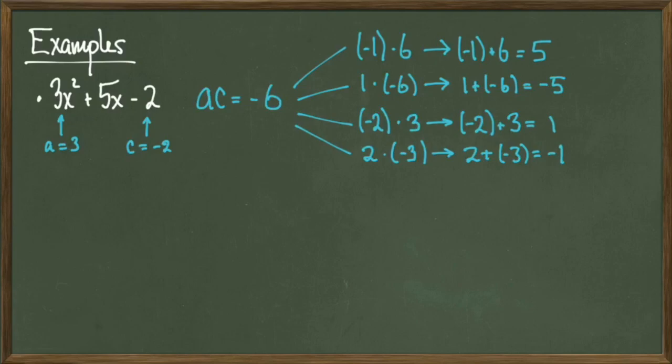We have a few different possibilities here: negative 1 times 6, 1 times negative 6, negative 2 times 3, and 2 times negative 3. When you run through and see what these factors sum to, we find that negative 1 times 6 is the factorization we're looking for. This concludes step 1 because we found two numbers.